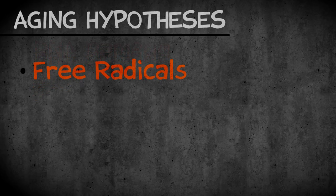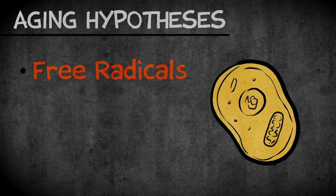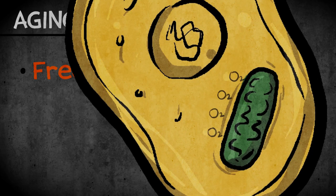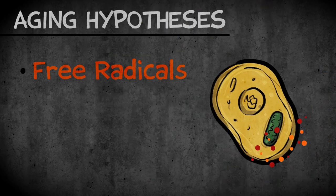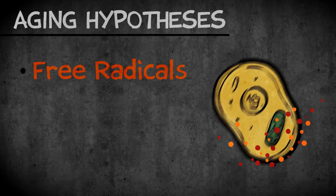Then there's the free radical theory of aging. This idea that as mitochondria in our cells burn energy with oxygen, it generates these very highly reactive compounds, which creates damaging oxidative stress, which in turn accumulates with age, and that's the cause of aging.